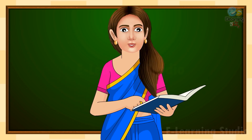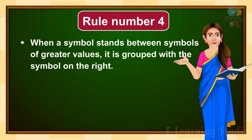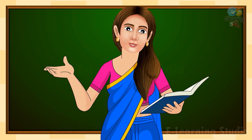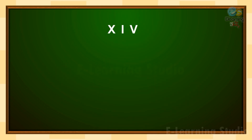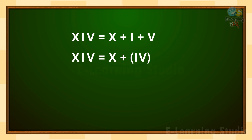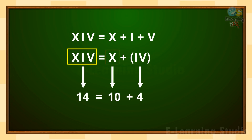Now children, move to the next rule — rule number four: when a symbol stands between symbols of greater values, it is grouped with the symbol on the right. Here you can see the letters X, I, and V. Letter X stands for ten, letter I for one, and letter V for five. Letter I is between X and V. Since I, which stands for one, is smaller, we group it with the symbol on the right, which is letter V. It becomes IV, which stands for four. So ten plus four is equal to fourteen.